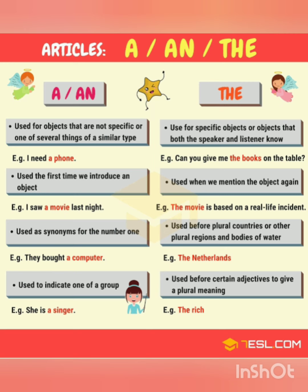The articles 'a' and 'an' are words used to show that the object is unknown to the reader. They are also called indefinite articles. They are used to show something for the first time, also used as synonyms for the number one, and to indicate one of a group.